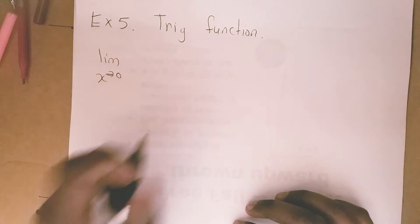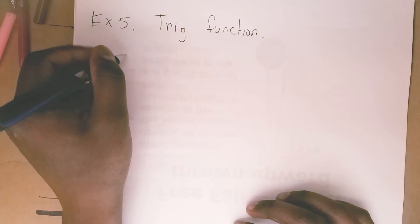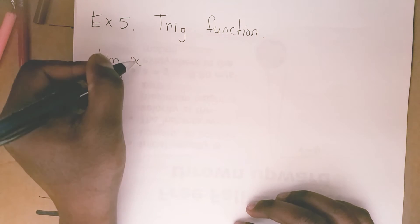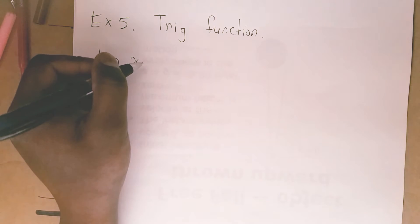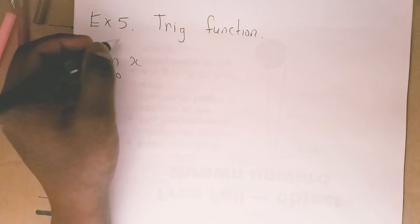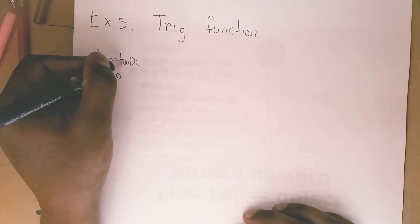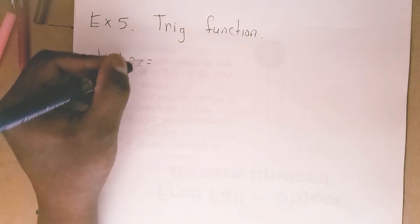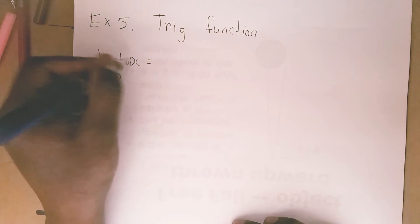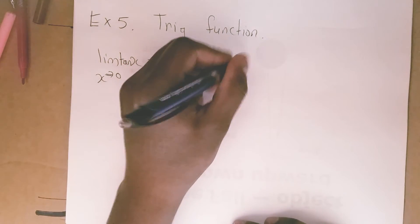This is the limit of trig functions. Find the limit as x approaches 0 for tan(x). We plug 0 into the equation: tan(0) is equal to 0. So the limit as x approaches 0 is 0.